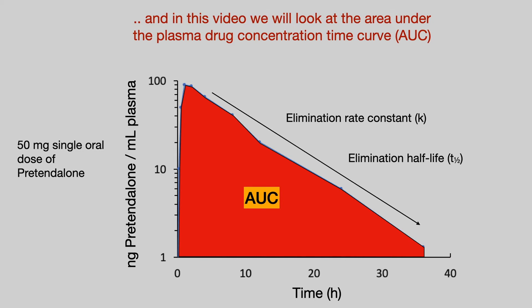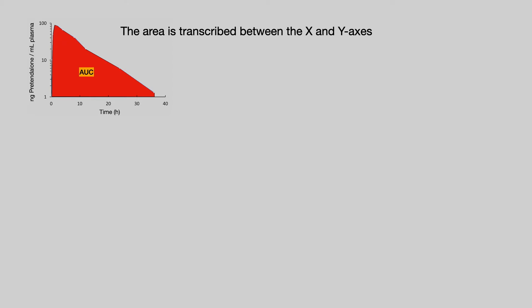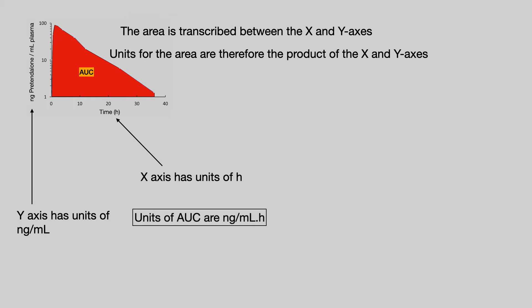Before we consider what the area under the curve is, let's consider the units. The area is inscribed between the x and y axes, so the units for the area are the product of the x and y axes. The units on the y axis are concentration — nanograms per ml in our case. The units on the x axis are time, or hours, so the units for area under the curve are nanograms per ml times hours. They look rather odd and sometimes cause a little confusion, but you can see where they come from.